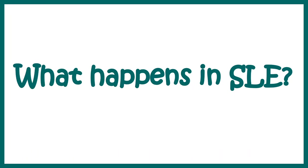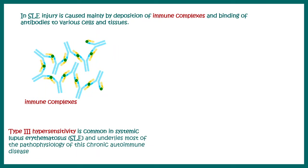Now let's talk about what really happens in systemic lupus. Systemic lupus is characterized by immune complexes, which are made up of antinuclear antigens and specific antibodies against them. All these immune complexes lead to various autoimmune effects and immune reactions, and are characterized as type 3 hypersensitivity reactions, which are very common in systemic lupus.